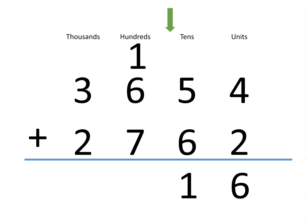Now, we can add the hundreds. 6 plus 1 plus 7 is 14. So, we have 14 hundreds or 1,000 and 4 hundreds.